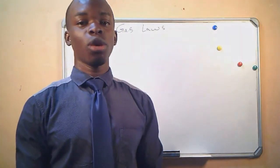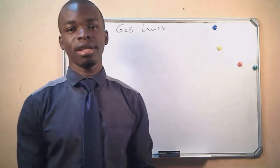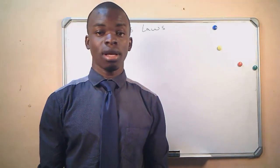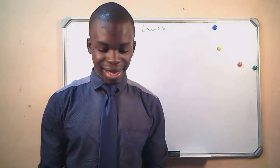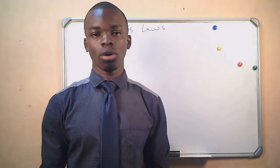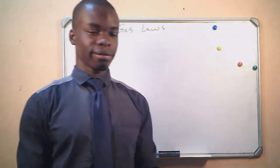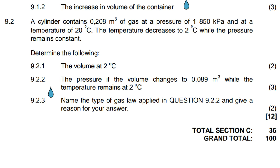Hi friends, welcome back to my channel. Today we are doing an exercise based on our previous lesson, which was gas laws. The exercise is taken from a question paper written on 21 November 2019. It's question number 9.2, and it reads: a cylinder contains 0.208 cubic meters of gas at a pressure of 1850 kilopascals and at a temperature of 20 degrees. The temperature decreases to 2 degrees while the pressure remains constant.